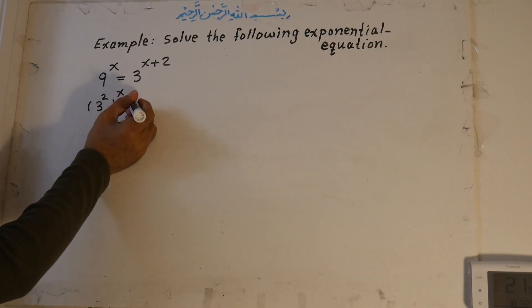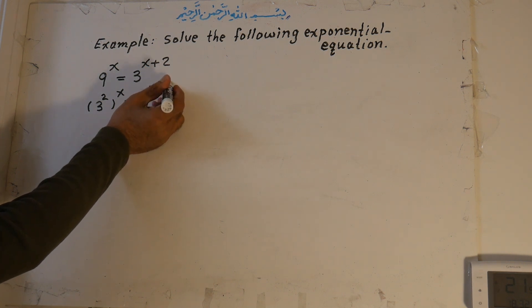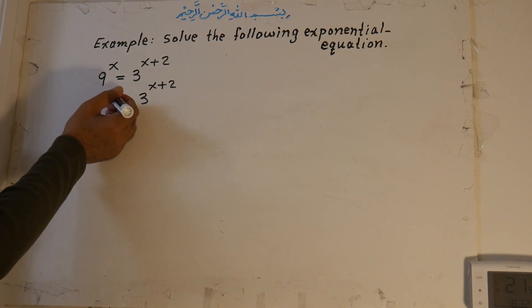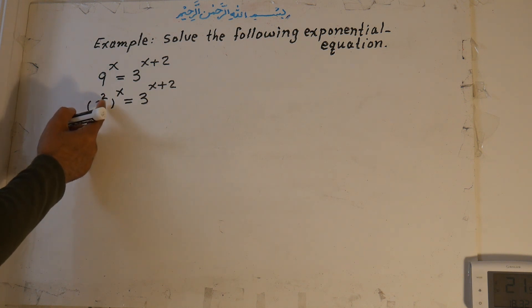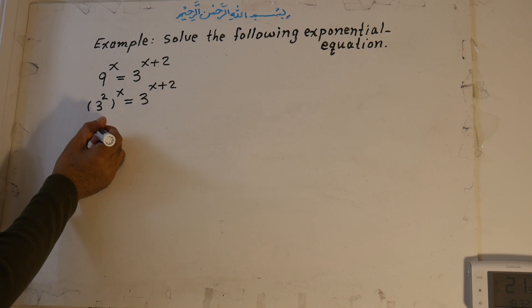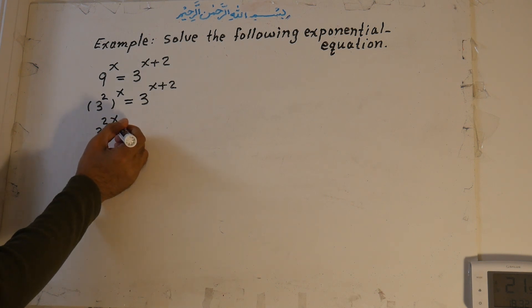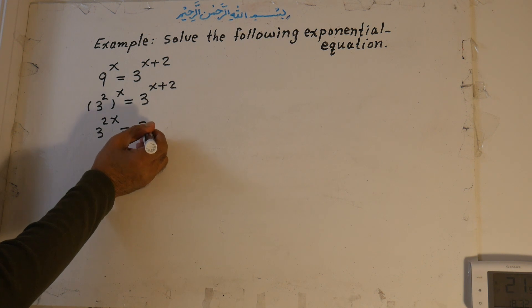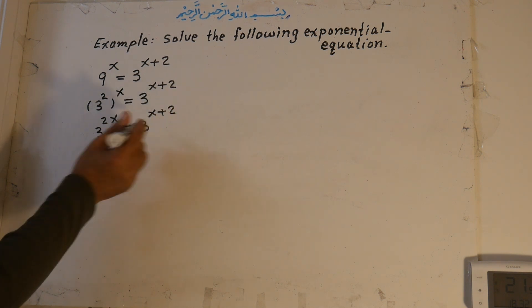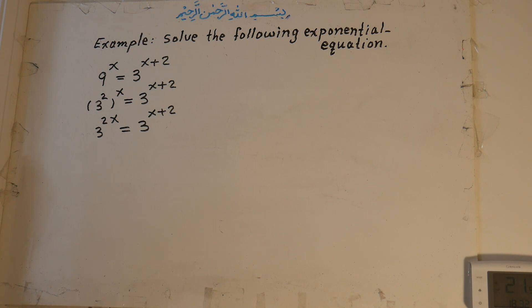So we have: 3 to the power of 2, all to the power of x, equals 3 to the power of x plus 2. We can multiply the powers together: 3 to the power of 2x equals 3 to the power of x plus 2. Now the bases on both sides of the equation are the same — both are base 3.